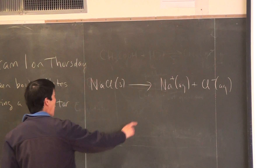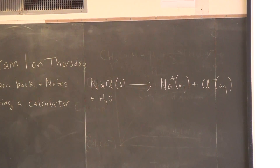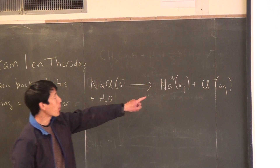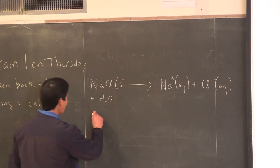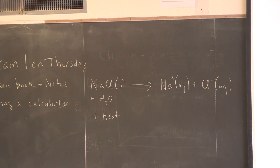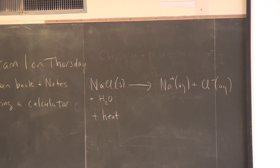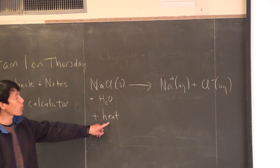Note that the AQ designation means water is present, so we could also put water as a reactant, because the water is involved in the aqueous part. And since this reaction is endothermic, heat is going to be considered a reactant. So the question is: how can we get more salt to dissolve? If we want more salt to dissolve, we shift the reaction toward the product side — we can add heat, which means raising the temperature, so using hot water should make more salt dissolve.